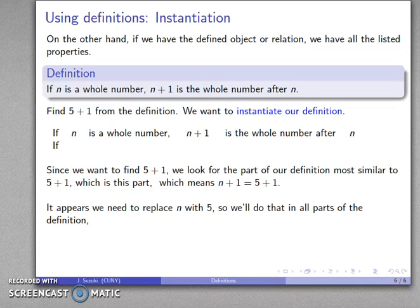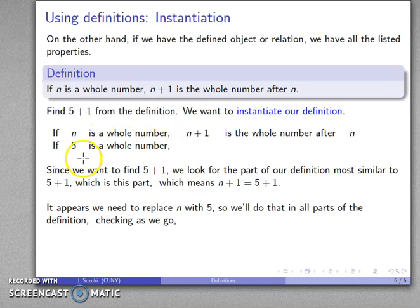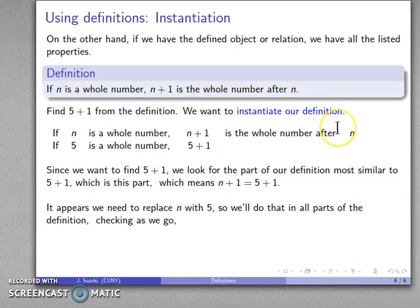So, replacing N with 5 throughout the definition: if 5 is a whole number, 5 plus 1 is the whole number after 5. We've confirmed 5 is a whole number, so we can proceed. The whole number after 5 would be 6.